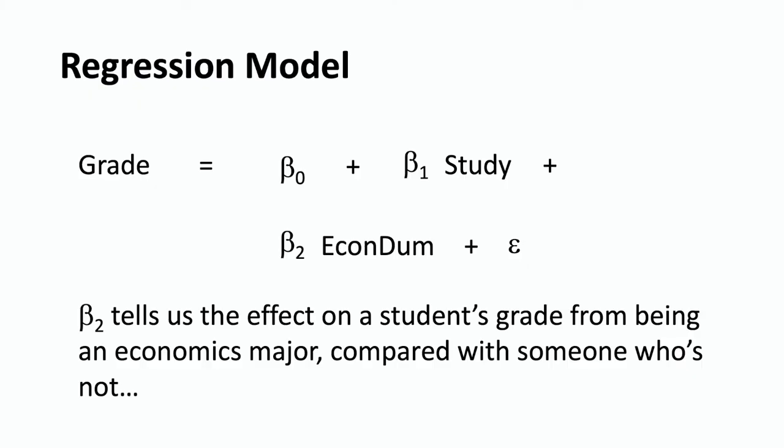When incorporating whether or not a student is an economics major into the regression model, we have a decision to make: do we use EconDum or Non-EconDum? Because you have to have an excluded category. In this model, we'll include EconDum, making Non-EconDum the excluded category. So the model is: grade = beta naught + beta 1 study + beta 2 EconDum. Since Non-EconDum is excluded, beta 2 tells us the effect on a student's grade from being an economics major compared with someone who's not, also controlling for the amount of time spent studying.